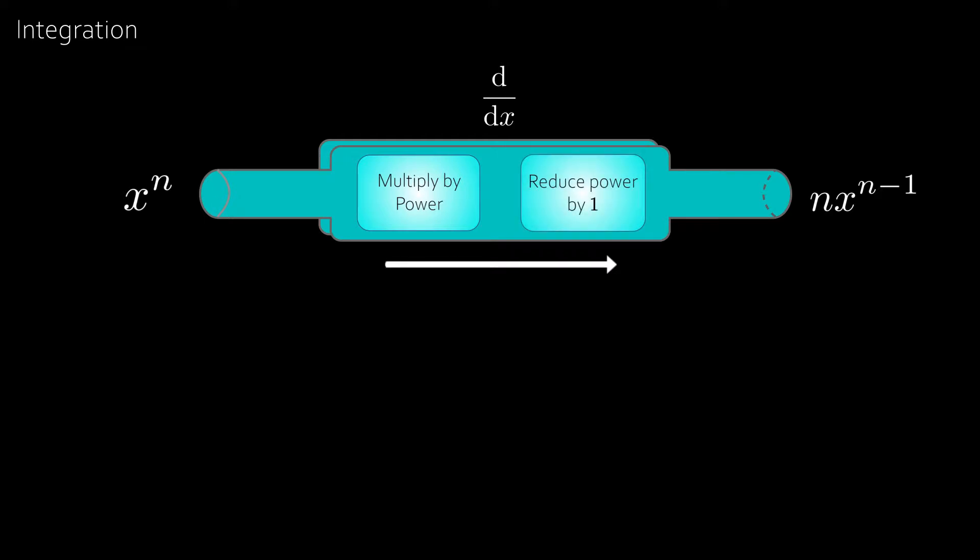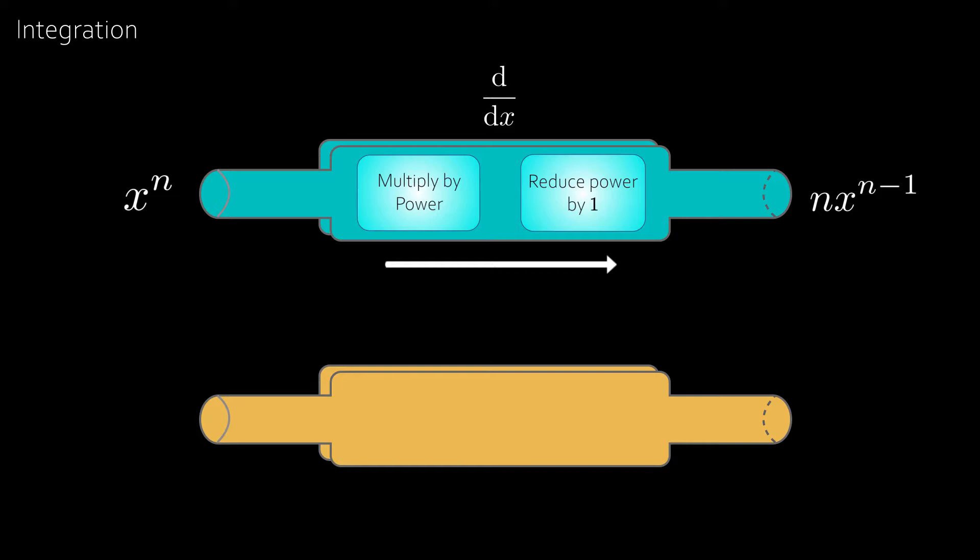Let's now create an anti-differentiation machine that does the opposite of the above machine. So this machine works in the opposite direction and we see that the other machine reduces the power by 1. So this machine needs to increase the power by 1. And in the other machine we see that we multiply by the power so we need to divide by the power.